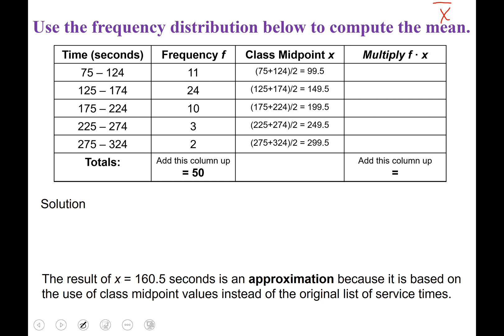Okay, so now that we have found the middle of all of those classes, we're going to multiply the frequency times that midpoint. So basically 11 times the 99.5, then 24 times 149.5. And write your result here each time. 10 times the 199.5. Okay, so pause the video and do those.